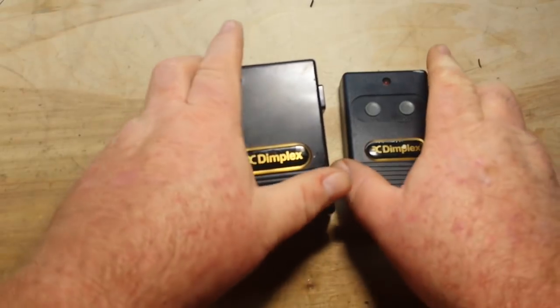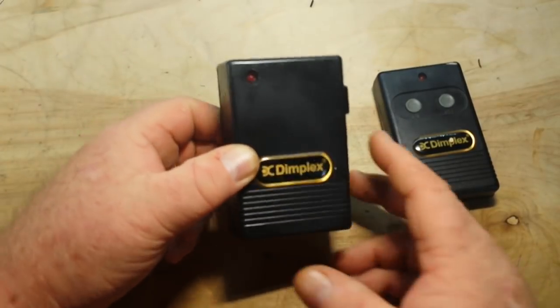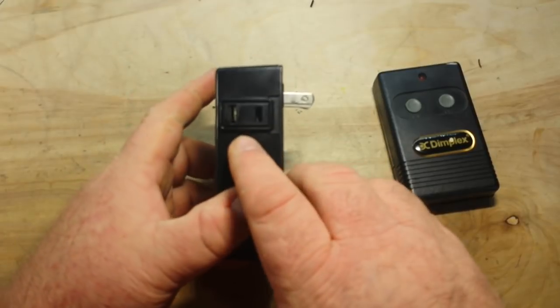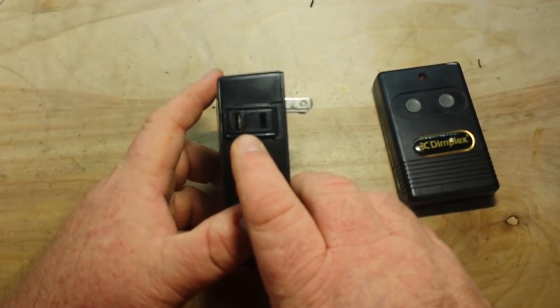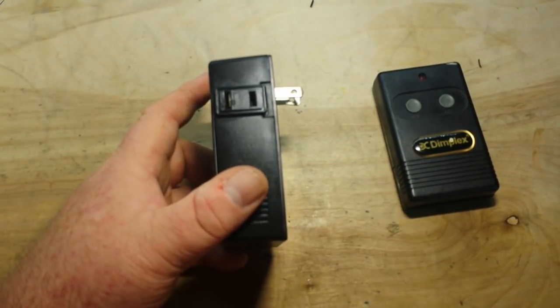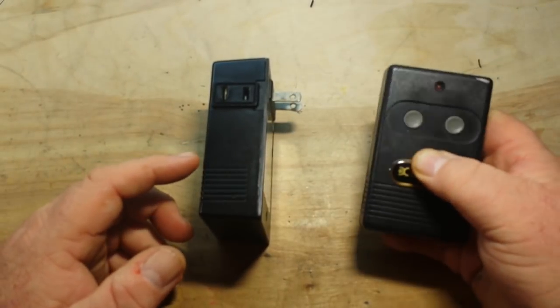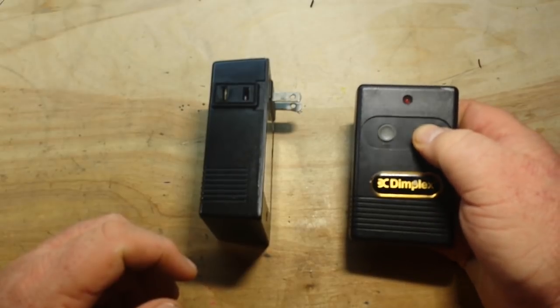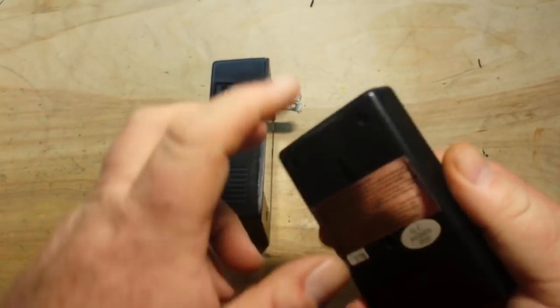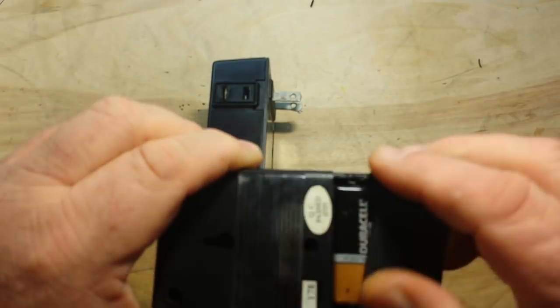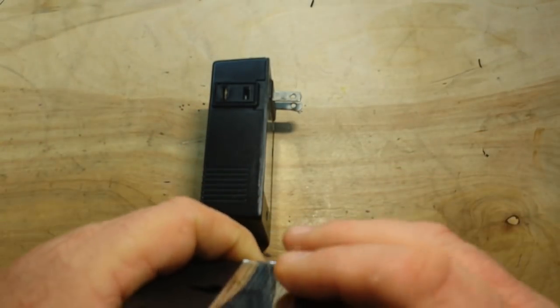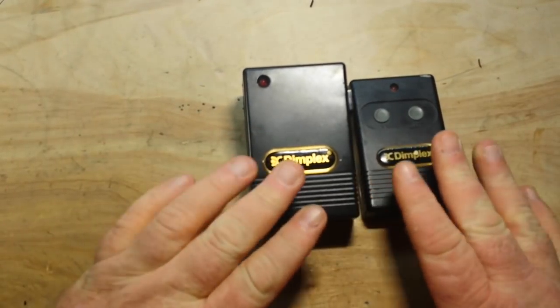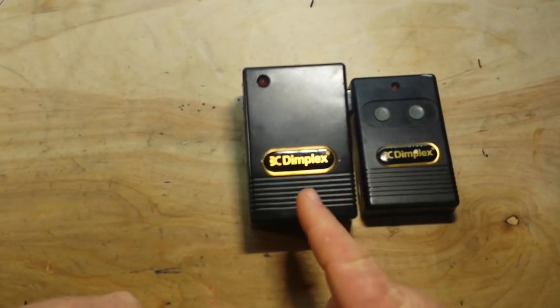This is the receiver unit with a polarized outlet that would plug into the wall, and then there's your polarized non-grounded outlet for your device. This is the remote control with two buttons: an on button and an off button, powered by a nine volt battery. They're incredibly simple devices.